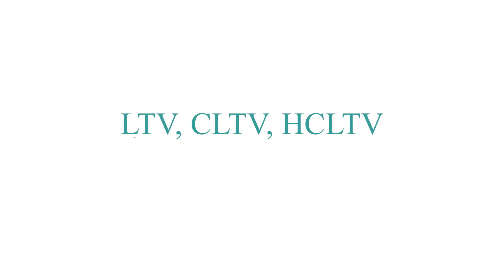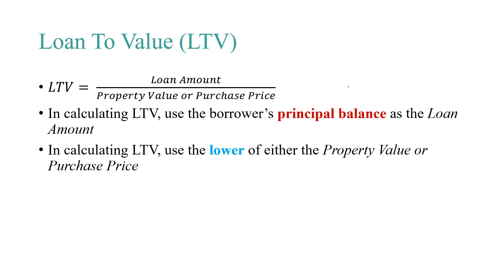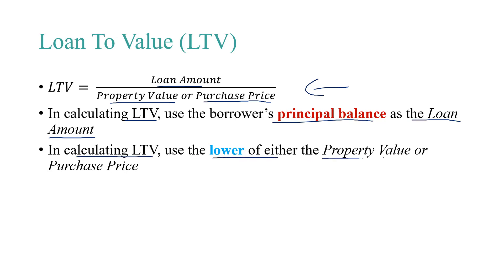Welcome to this module on LTV, CLTV, and HCLTV. LTV is calculated using the following equation: it's the loan amount divided by the property's value or the purchase price, whichever is lower. We use the borrower's principal balance as the loan amount, and we use the lower of either the property value or the purchase price when making the calculation.